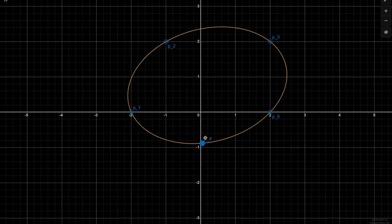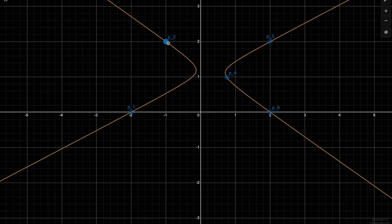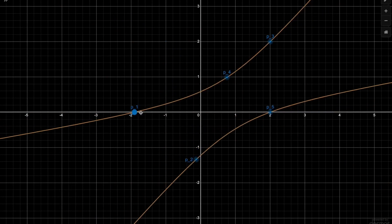I have a Desmos link of the interpolated conic section equation in the description, where you can move around the 5 points yourself and see how the conic section changes.